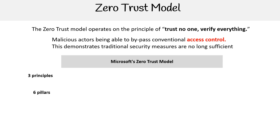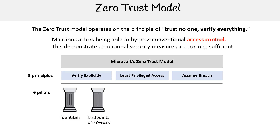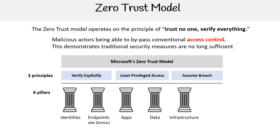The Microsoft zero trust model is based on three principles and six foundational pillars. The three principles are: verify explicitly, least privileged access, and assume breach. The six foundational pillars are: identities, endpoints — which you can think of simply as devices — apps, data, infrastructure, and networks. Identities deserve special emphasis: when an identity attempts to access a resource, it must be verified with strong authentication and follow least privilege access principles. The zero trust model is not unique to Microsoft — GCP and AWS have their own versions — but this one is specifically tailored for Microsoft.